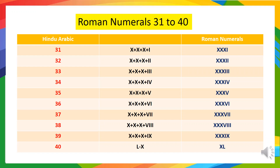31 means 10 plus 10 plus 10 plus 1, so we will write it as XXXI. 32 means 10 plus 10 plus 10 plus 2, so we will write it as XXXII. 33 means 10 plus 10 plus 10 plus 3, so we will write it as XXXIII. 34 means 10 plus 10 plus 10 plus 4, so we will write it as XXXIV.